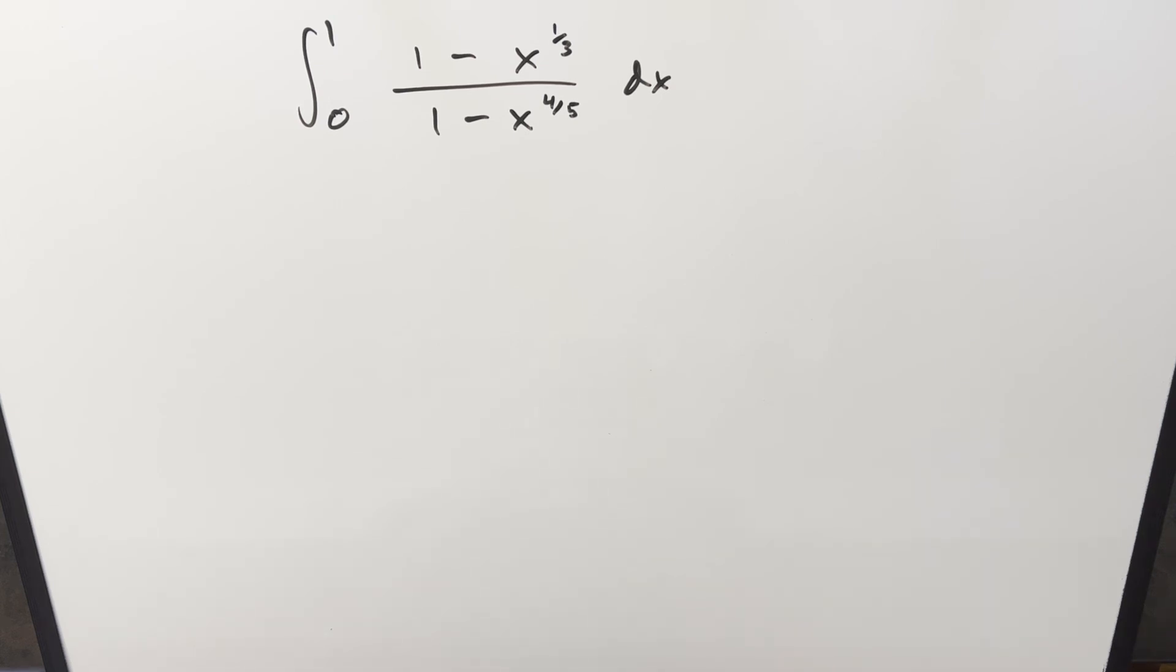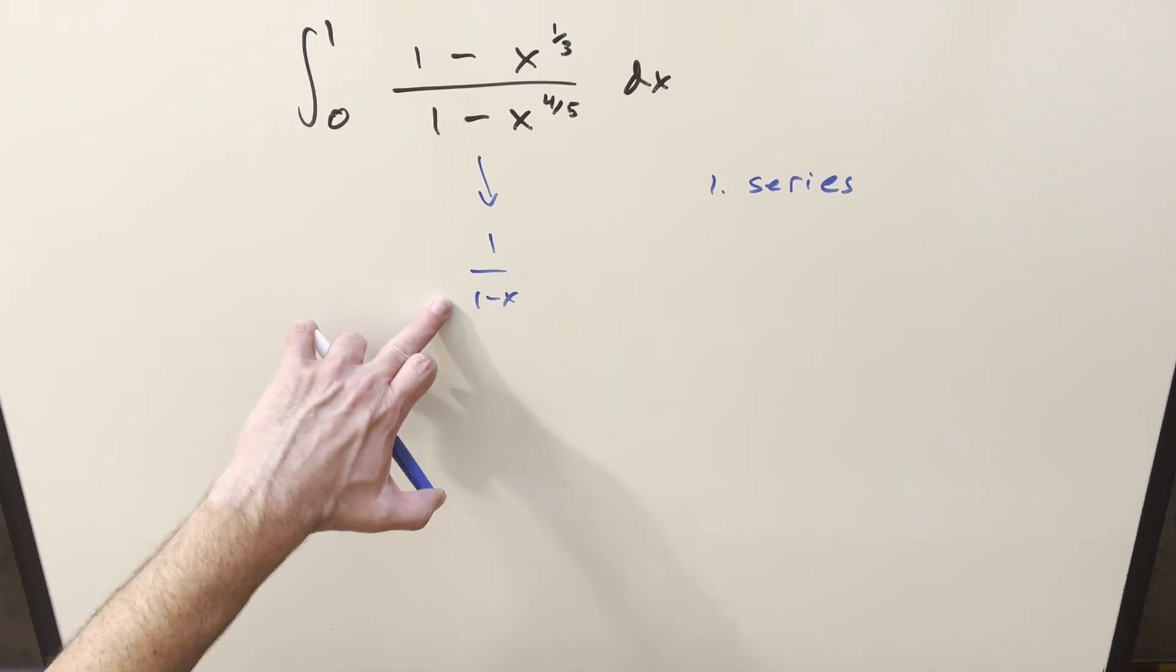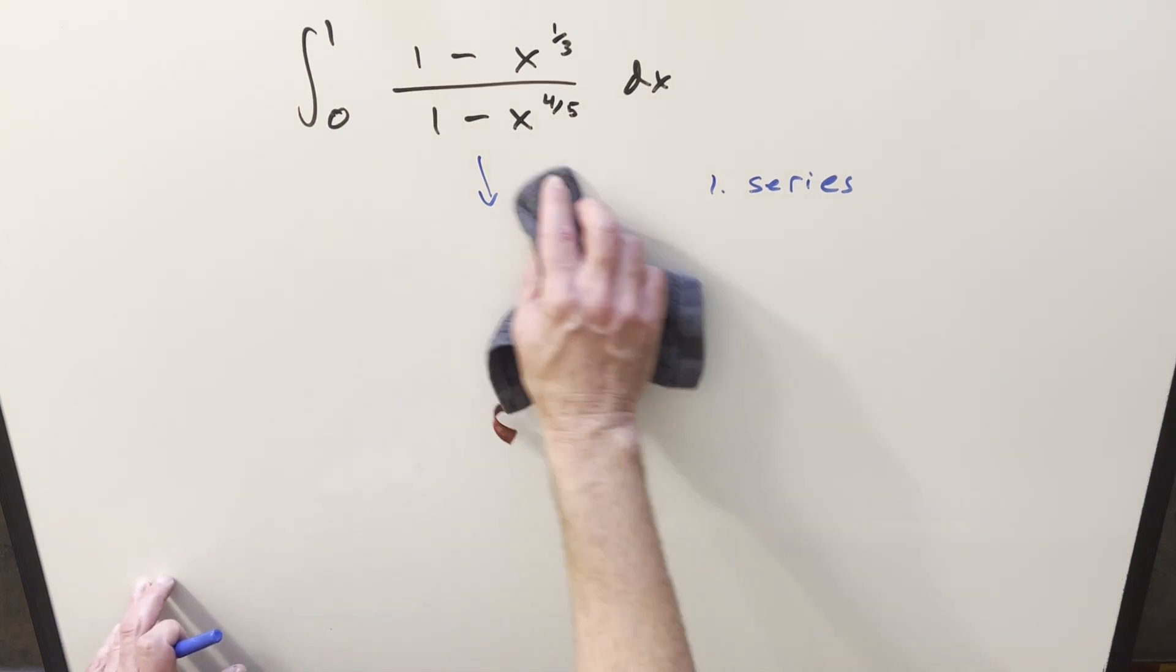Now for this one, I think I have three different ways to do it, or maybe at least two and a half different ways. One way we could do is I think series would be a good way, because just noticing with this, even though we've got 4/5, this is a lot like 1 over 1 minus x. And then this, with our bounds from 0 to 1, we could use the geometric series formula on it. But today, I don't feel like doing that one, so we'll skip that.